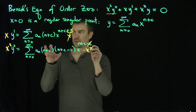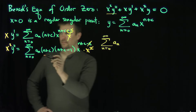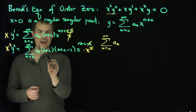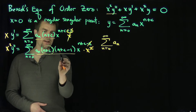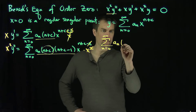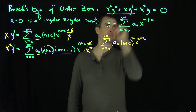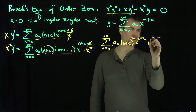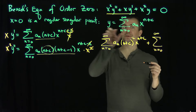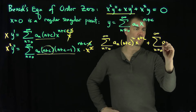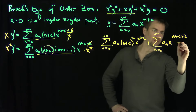Now Bessel's equation becomes, putting all these terms together, the sum from n equals 0 to infinity of a_n times (n plus c) squared times x to the n plus c, plus the sum from n equals 0 to infinity of a_n times x to the n plus c plus 2, all equal to 0. The first two derivative terms combine to give (n plus c) squared, and the x squared term from the equation contributes the second sum.